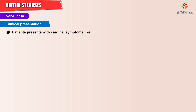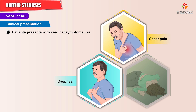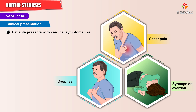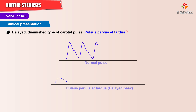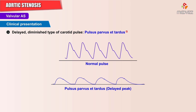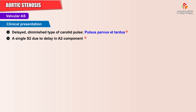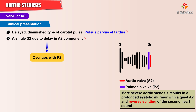Patients present with cardinal symptoms of cardiac disease like dyspnea, chest pain, and syncope on exertion. There may be a delayed and diminished type of carotid pulse termed pulsus parvus et tardus, a single S2 due to a delay in the A2 component resulting in an overlap with the P2, and an audible S4 are commonly seen in patients with aortic stenosis.